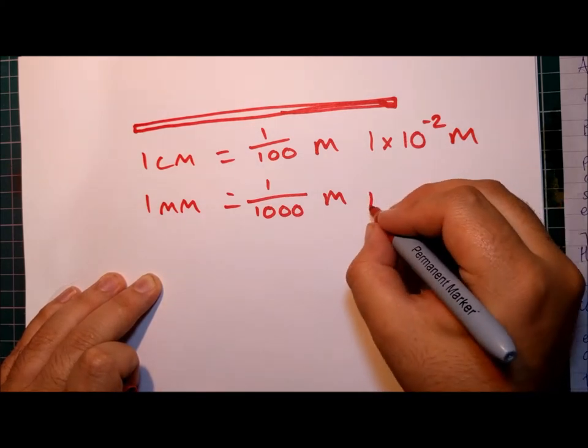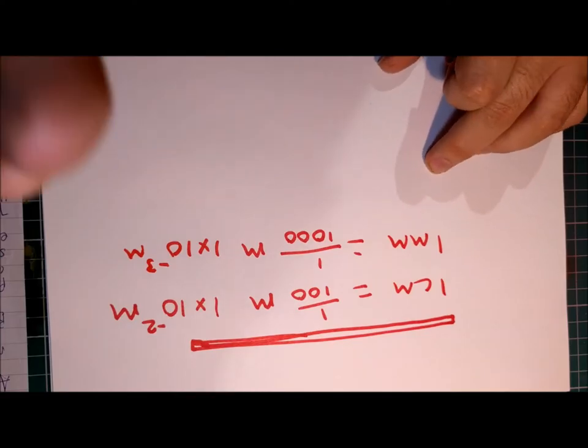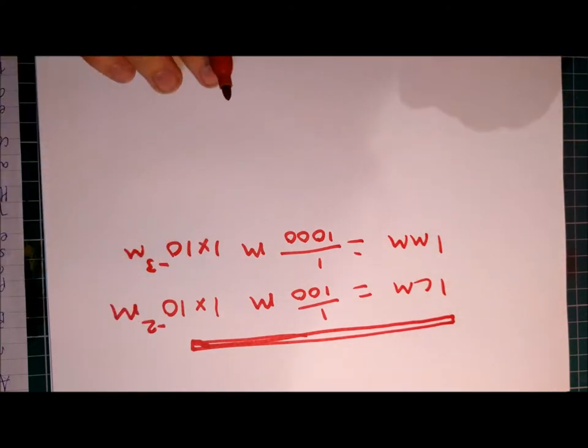A millimeter then would be one times ten to minus three meters. That's one millimeter.